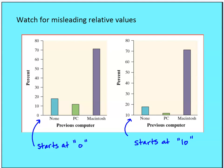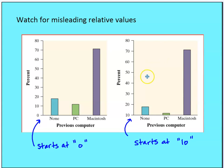Another thing to watch out for is misleading relative values. Here is a bar graph showing percent of people who owned a previous computer — PC or Mac. One version has a scale starting at zero, the other starts at 10. When the scale starts at 10, the PC and 'none' values look very small, skewing the visual representation. It's a legitimate form of representation, but it's misleading. Always identify the incremental values and where the scale starts when interpreting bar graphs.